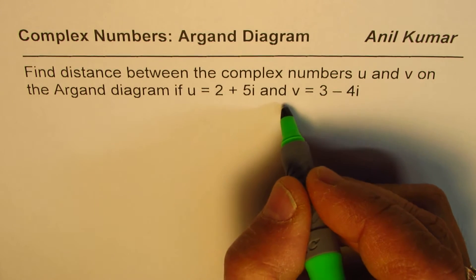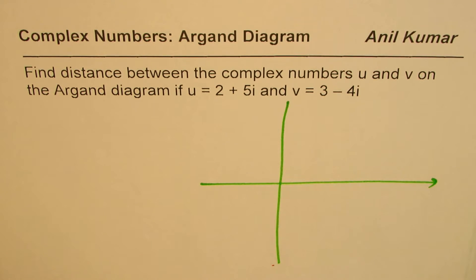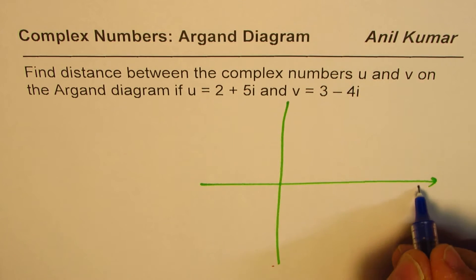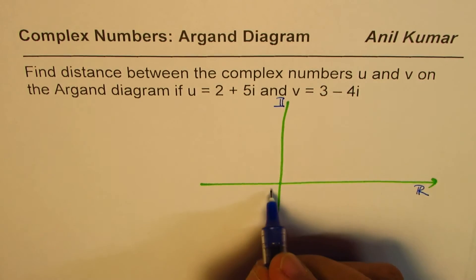Let me sketch one here and then we'll discuss it. This is your vertical imaginary axis and here we have a horizontal real axis. That is the real axis and this is the imaginary axis and that's the origin.